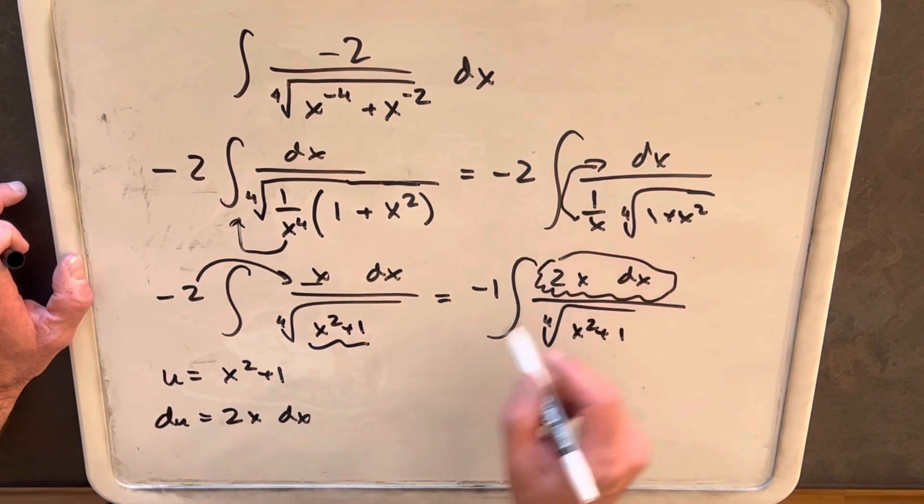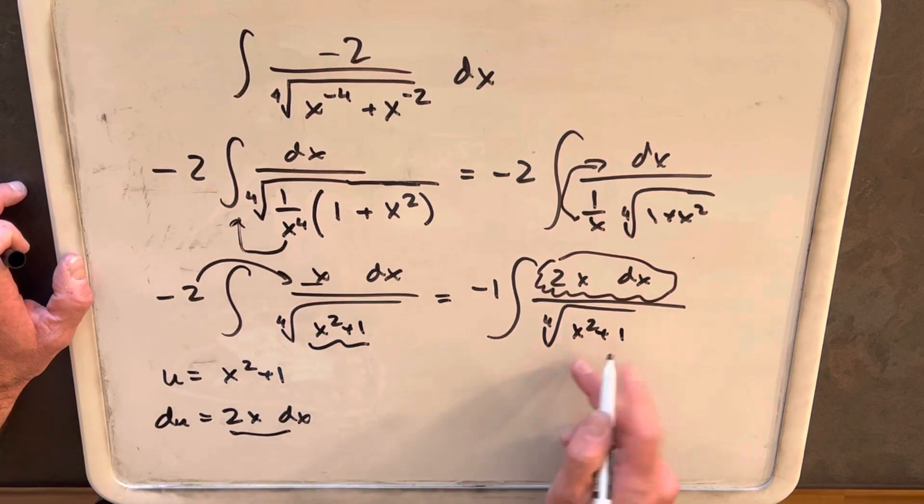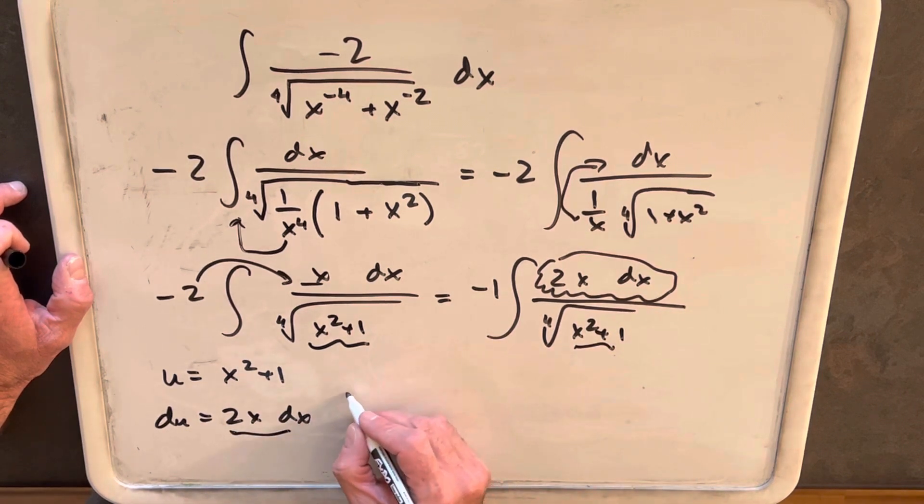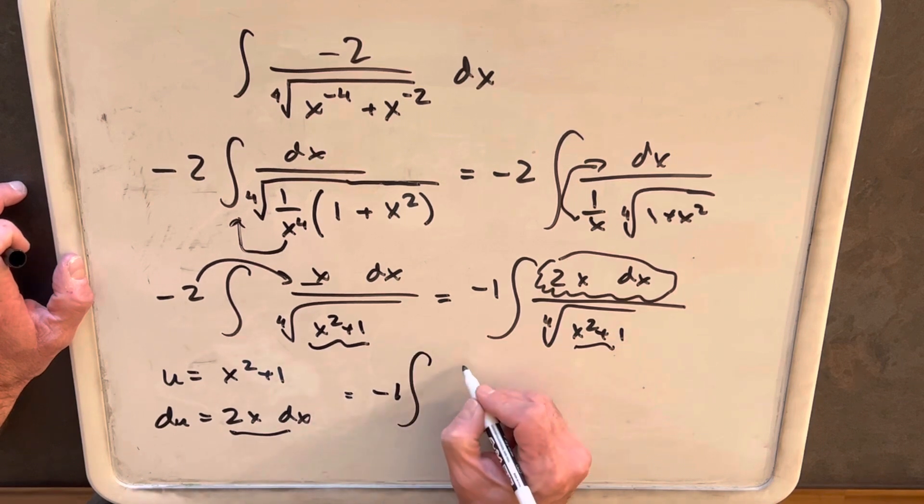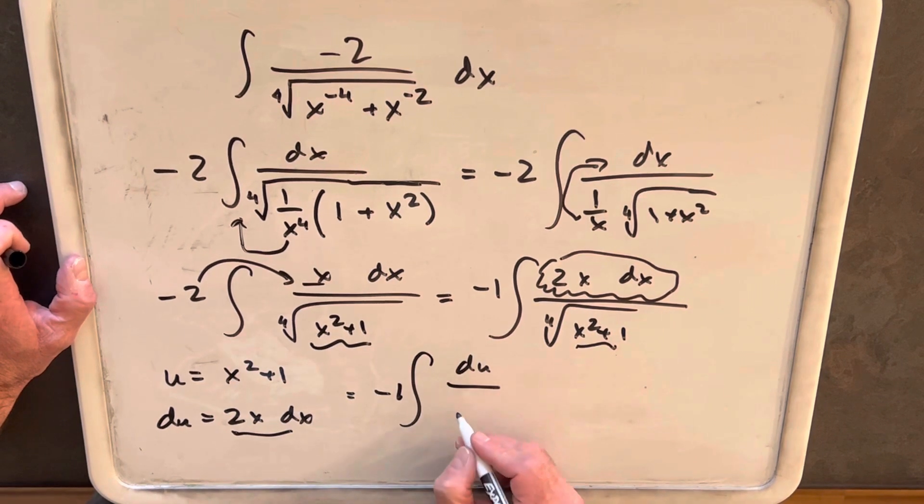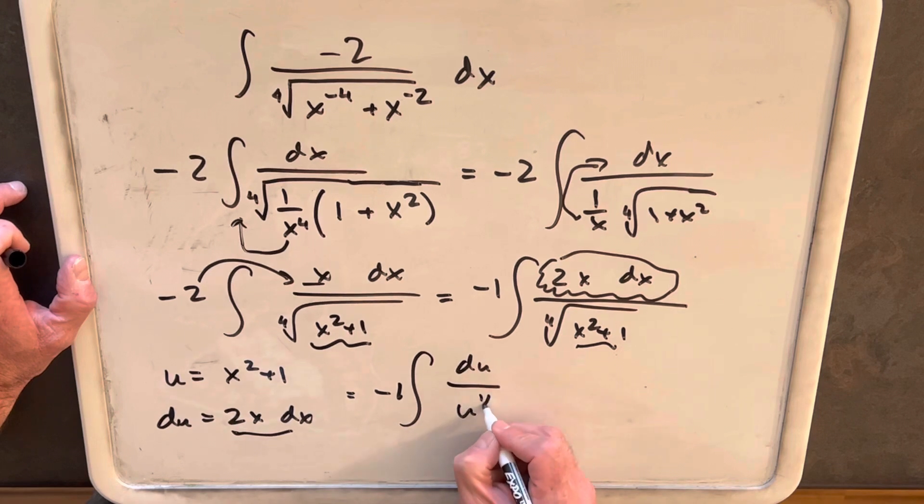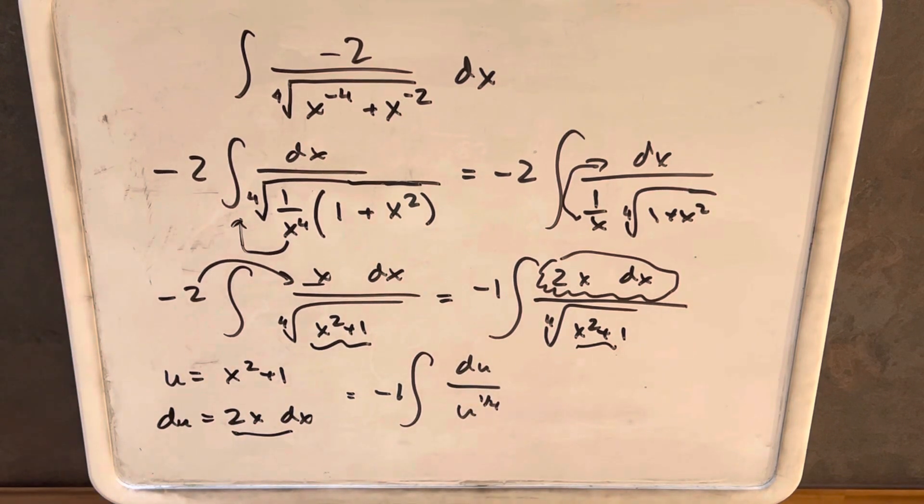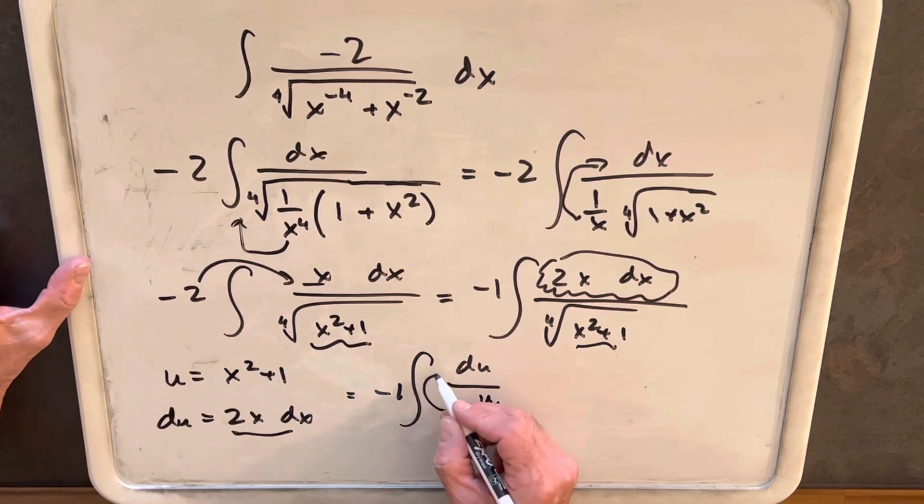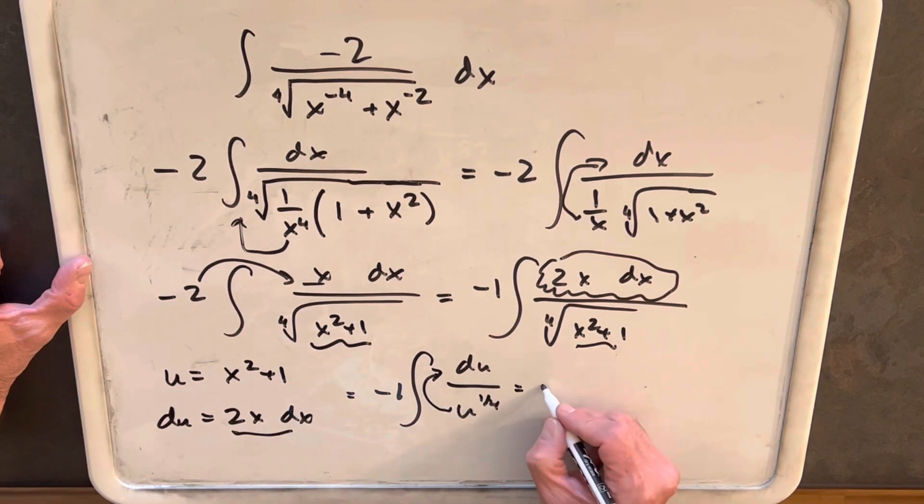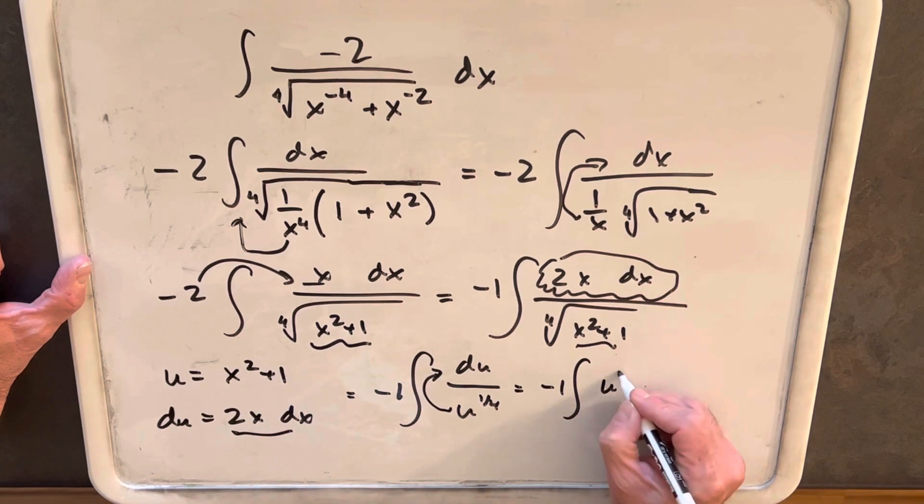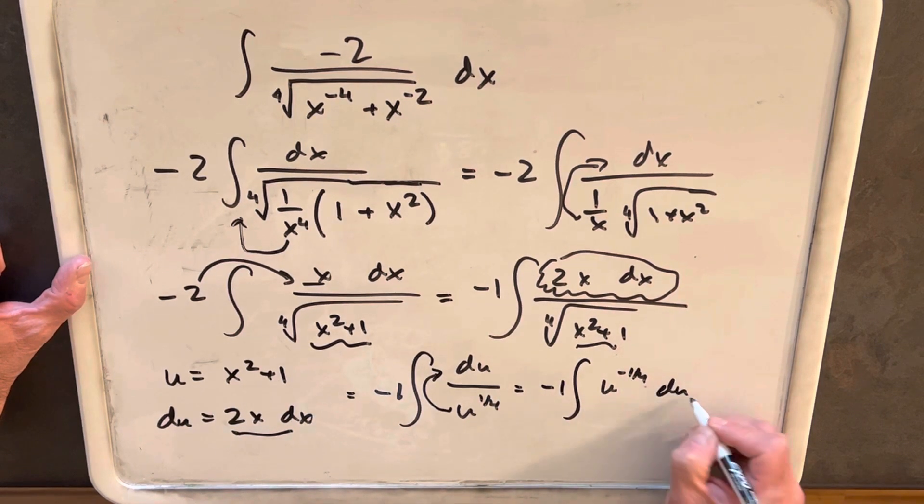Notice that this is going to be our du that we have here, and we get our u here. Making our substitution now, it's going to be du over u to the 1/4, because we're going to be using the power rule. When we bring this into the numerator, it's u to the minus 1/4. So we'll have minus the integral of u to the minus 1/4 du.